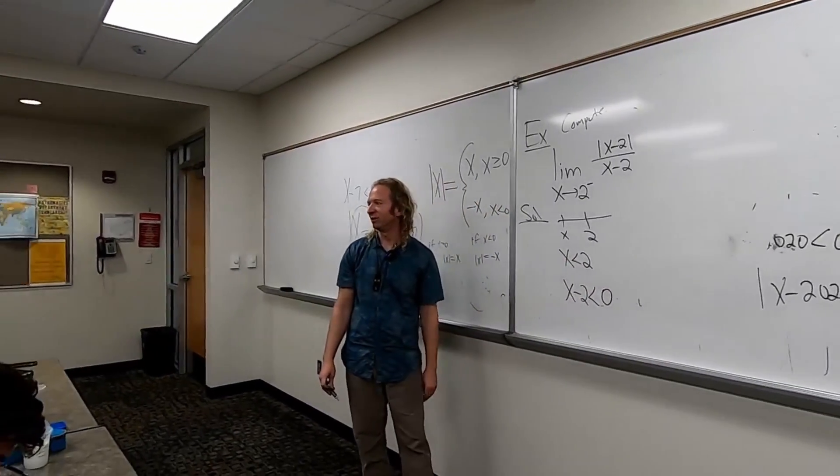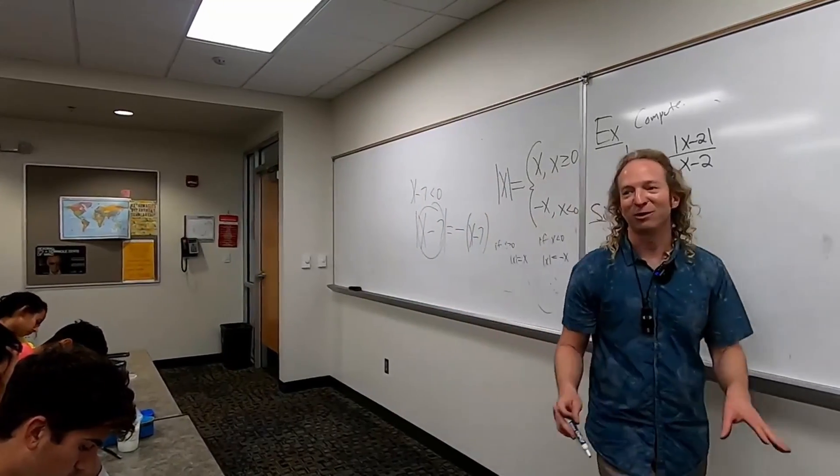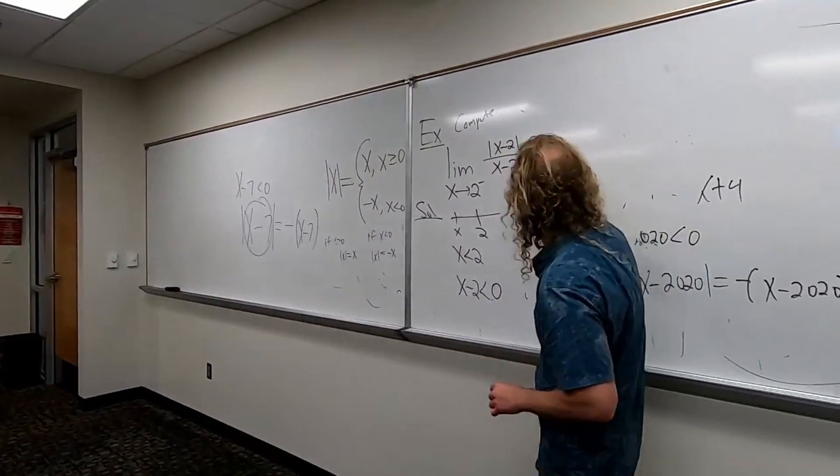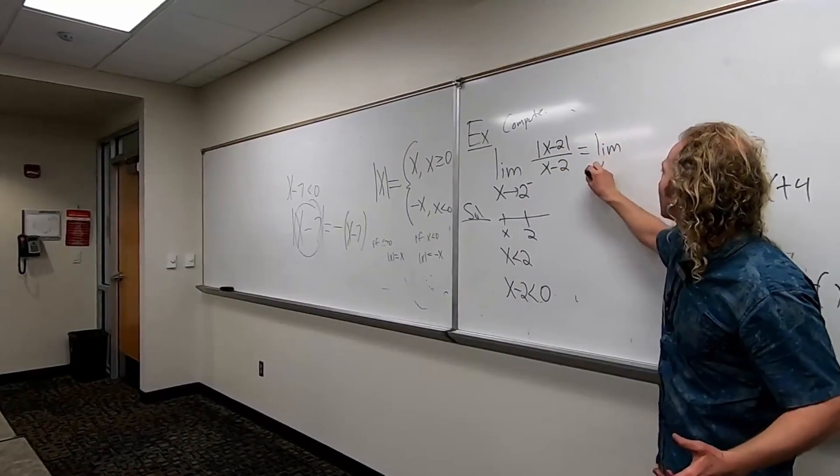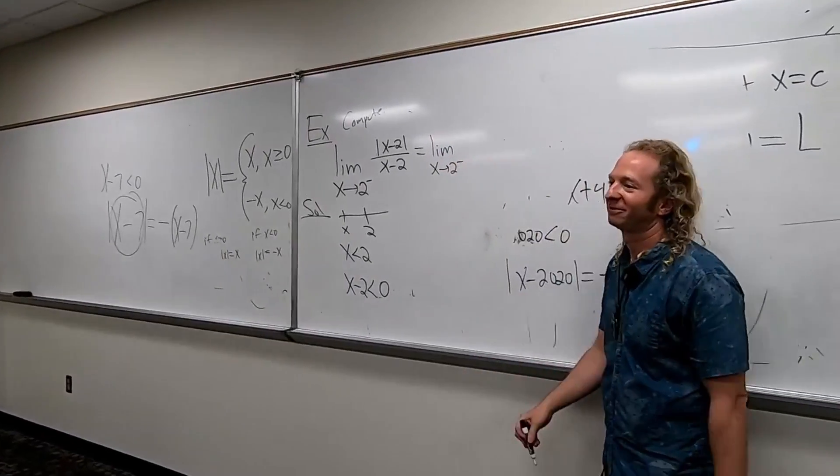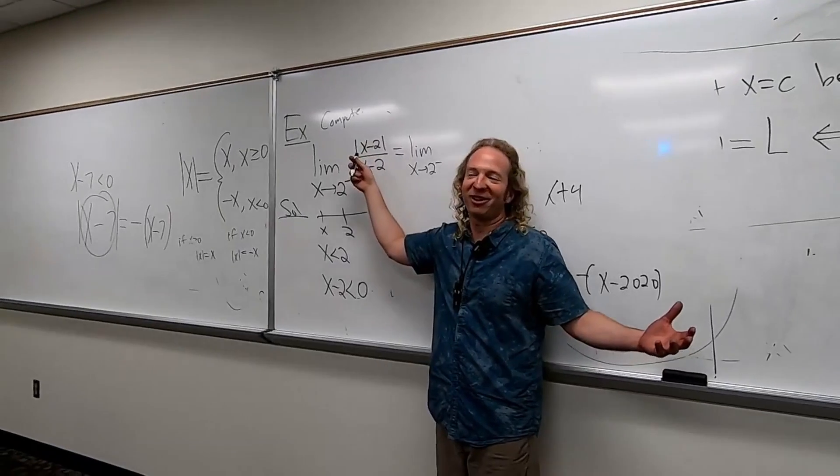It's beautiful. This is math. I love this problem. It's so beautiful. Now look, now we can do the problem. Because this is the limit. As x approaches 2 from the left. And then now we can replace the absolute value.